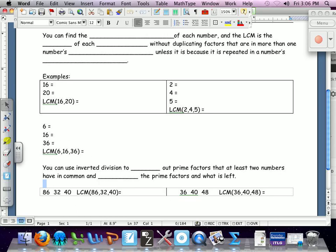The examples hopefully will make it much more clear. So you can find the prime factorization of each number. And the LCM is the product of each prime factor. So you have to include all of the prime factors, but without duplicating factors that are in more than one number's prime factorization. If we included every number's prime factorization list entirely without looking for these duplicates, we'd just be finding the product of the numbers, which isn't necessarily the least common multiple. I might be able to find a multiple that's common to them that's smaller. So I have to eliminate these duplications. But I might need to have the 2's in there more than one, the 3's in there more than one, or whatever, because it's repeated in a number's prime factorization.